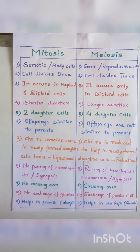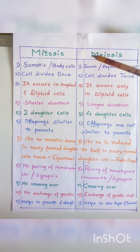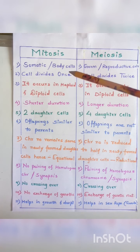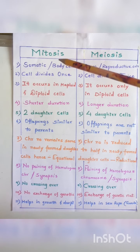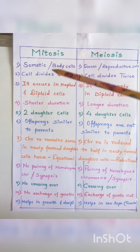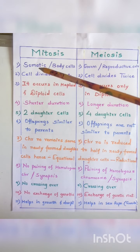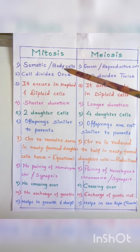Students, let's study the difference between mitosis and meiosis. These are the two types of cell division. The first point of differentiation is where does this cell division take place. Mitosis is a cell division which takes place in somatic cells, and these somatic cells are also called as body cells.